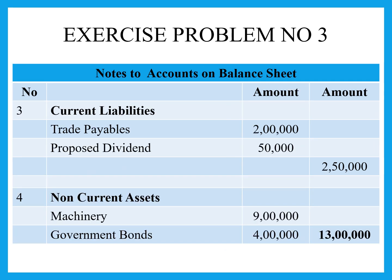It's a very simple problem. Under current liabilities, we have trade payables — creditors — and proposed dividend. The shareholders have proposed a dividend to be paid to shareholders. Therefore, the total current liabilities is 2 lakh 50,000 rupees.